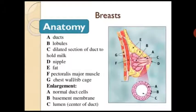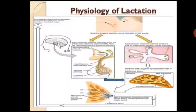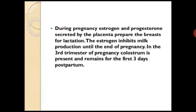Breast anatomy: the breast consists of ducts, lobules, dilated secretory ducts containing old milk; D is the nipple, E is fat, F is the pectoralis major muscle, and G is the chest wall/rib cage area. Enlargement of normal duct cells occurs at the basement membrane and lumen center of the duct.